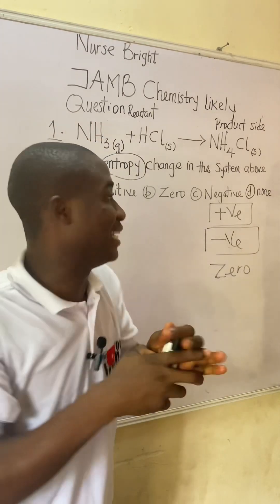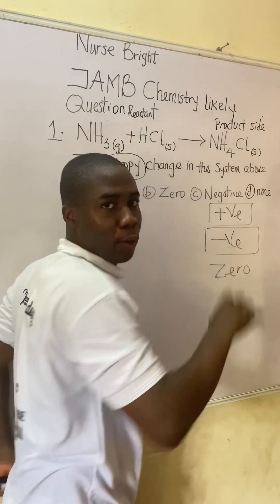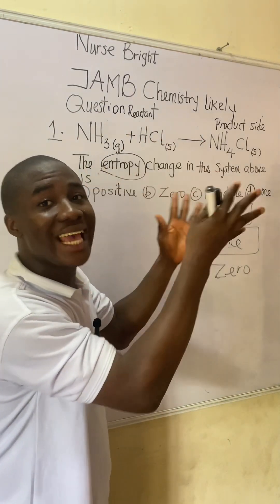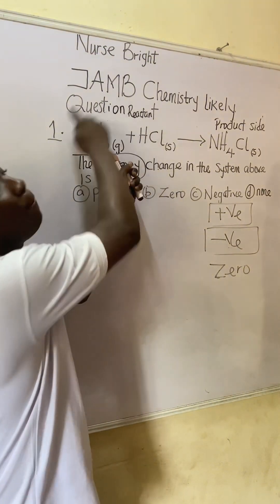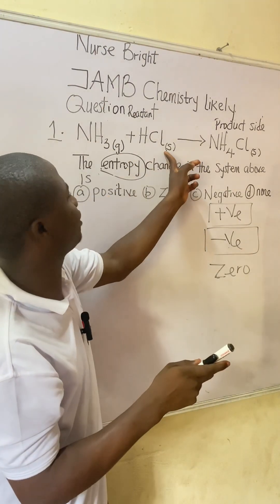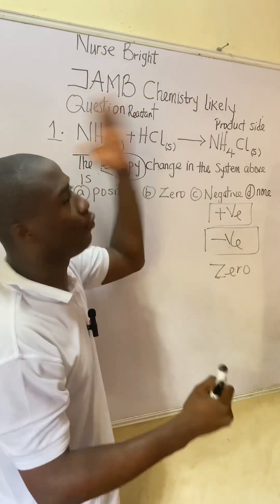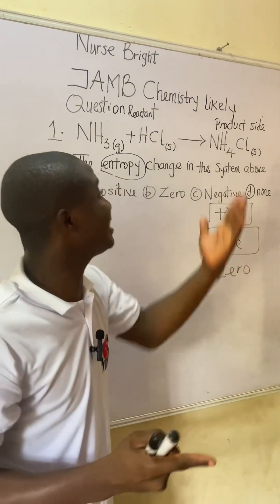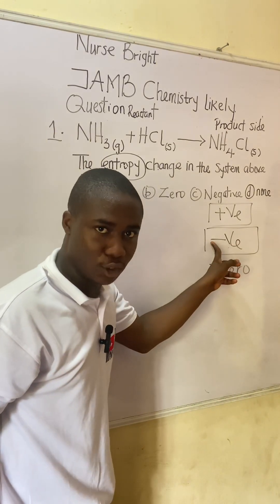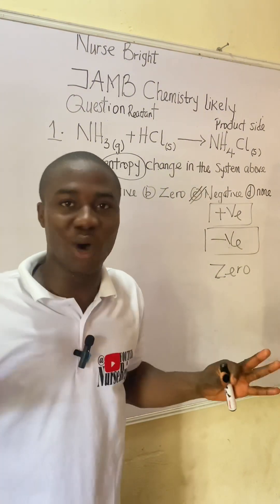Let's check this reaction to determine the sign of the entropy change. On the product side, you can see solid — the state of matter here is solid. On the reactant side, the first species is ammonia (NH₃), which is a gas, and there is also a solid. Comparing both sides, the reactant side has more gas species than the product side. Therefore, the entropy change is negative — the answer is option C.